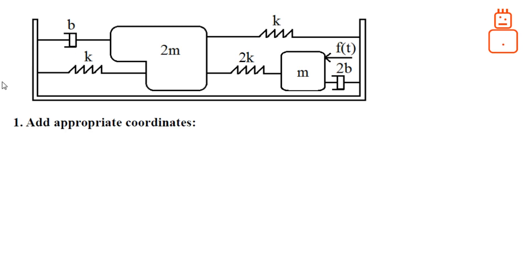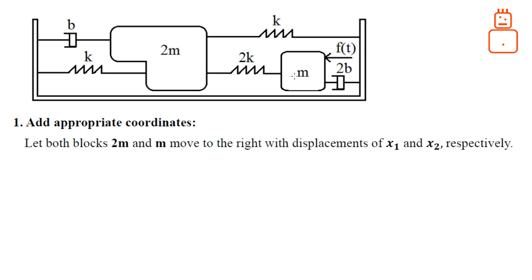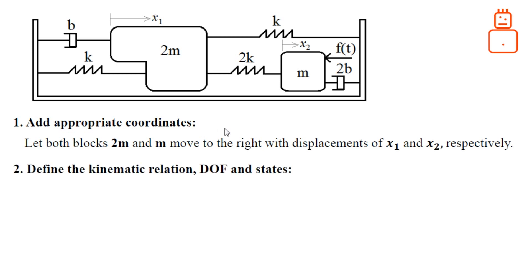The first step is to add appropriate coordinates to the system. You can assume any coordinate for the system. Let us assume that both blocks are moving to the right — with displacement x1 for block 2M and x2 for block M. So block M is moving to the right by displacement x2, while block 2M is moving to the right with displacement x1.